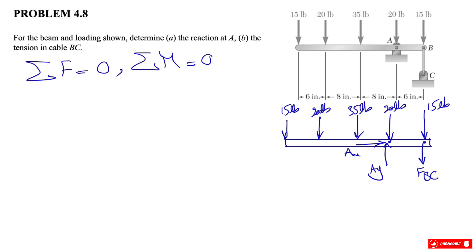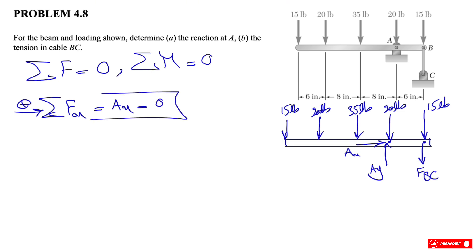The easiest equation to start with seems to be the x-direction, so let's start with the sum of Fx, with rightward as positive. Looking at the free body diagram, we can see that only Ax is the force in the x direction, meaning Ax equals zero — there is no reaction in the x direction.